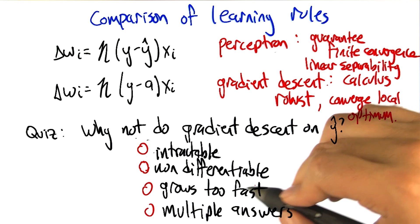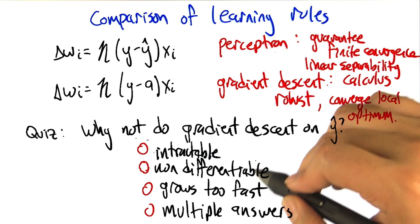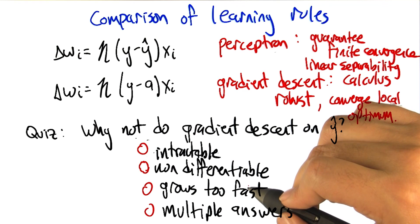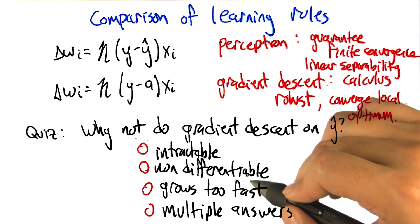Another one is, well sure we can do all that. It's not intractable and it's not non-differentiable, it's differentiable. But if we do that then the weights tend to grow too fast and so you end up getting unstable answers.